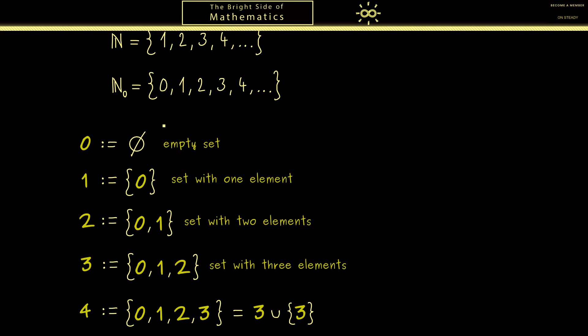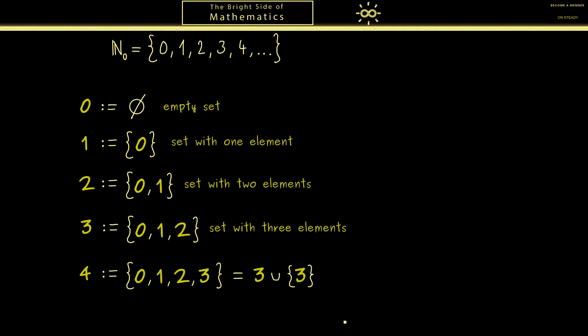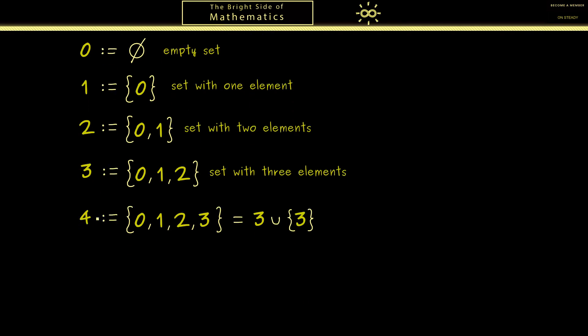And after that we want to put them into one set and call it the natural numbers N_0. However there you might see a problem because this whole construction here never stops. Or to put it in other words the natural numbers the set N_0 should have infinitely many elements.